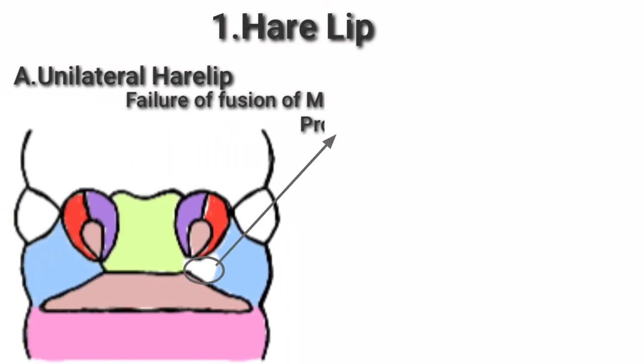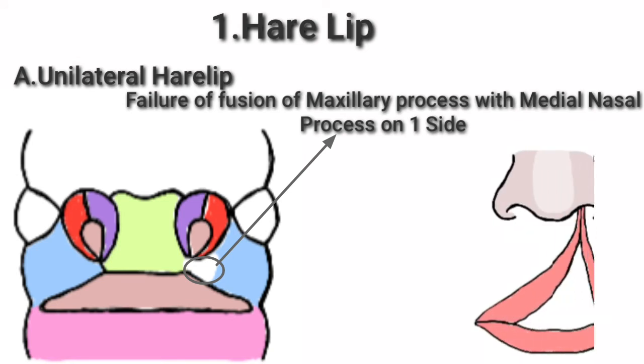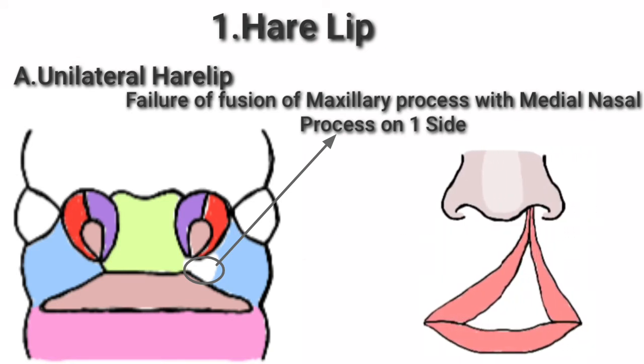First, unilateral hare lip. See this diagram. When the maxillary process fails to fuse with the medial nasal process, unilateral hare lip will occur.